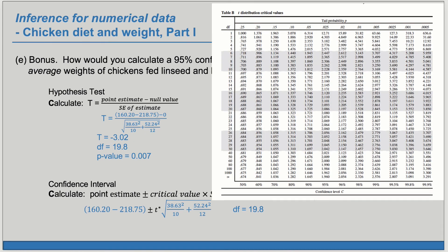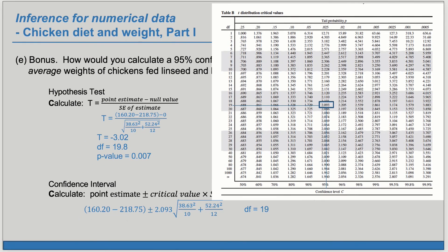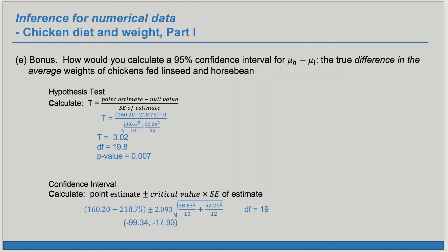We have 19.8 degrees of freedom. What we're going to do is round down, as that will give us the more conservative, larger value for T star. So we go to row 19 and the column corresponding to 95% confidence, and we get a T star of 2.093. If you're using a table and your degrees of freedom isn't located on the table, round down to the closest value on the table. We can then evaluate this to get our lower and upper bounds, using degrees of freedom of 19.